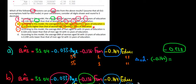Let's work on part C now. According to the model, the average BMI of men with the age of 55 with 13 years of education is going to be 0.328 units lower than of men with age of 55 with 11 years of education.